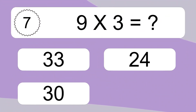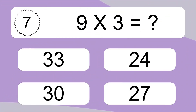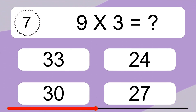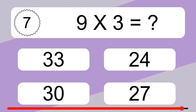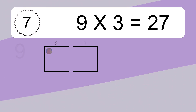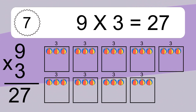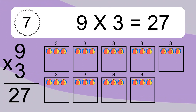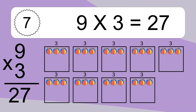9 times 3 equals what? We have 9 boxes, and each box has 3 colorful balls inside. If you count all the balls in all the boxes together, you will have 9 times 3 balls. This equals 27 balls.